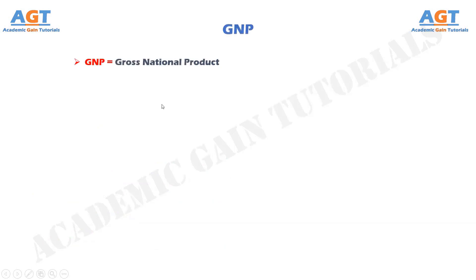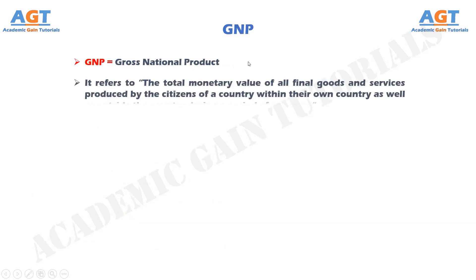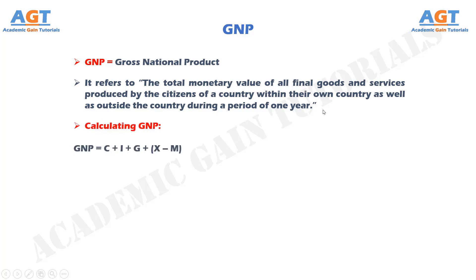The term GNP is the abbreviated form of Gross National Product. It refers to the total monetary value of all final goods and services produced by the citizens of a country within their own country as well as outside the country during a period of one year. The simple formula used for calculating GNP is: GNP = C + I + G + (X - M).